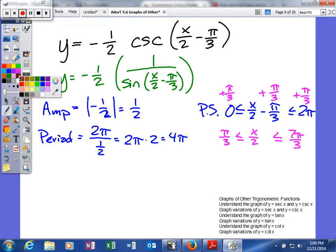Next, we're going to multiply by 2. Multiply by 2, times 2, times 2. Here, what you'll get is 2π/3 less than or equal to x, which is less than or equal to 14π/3.